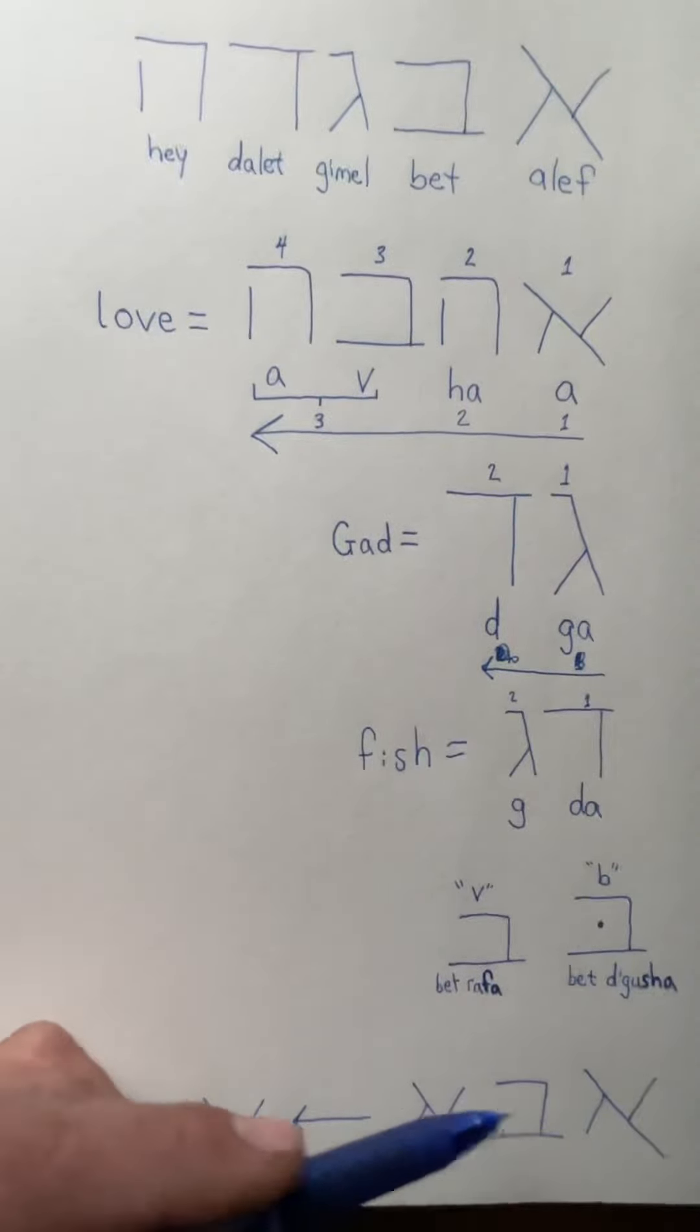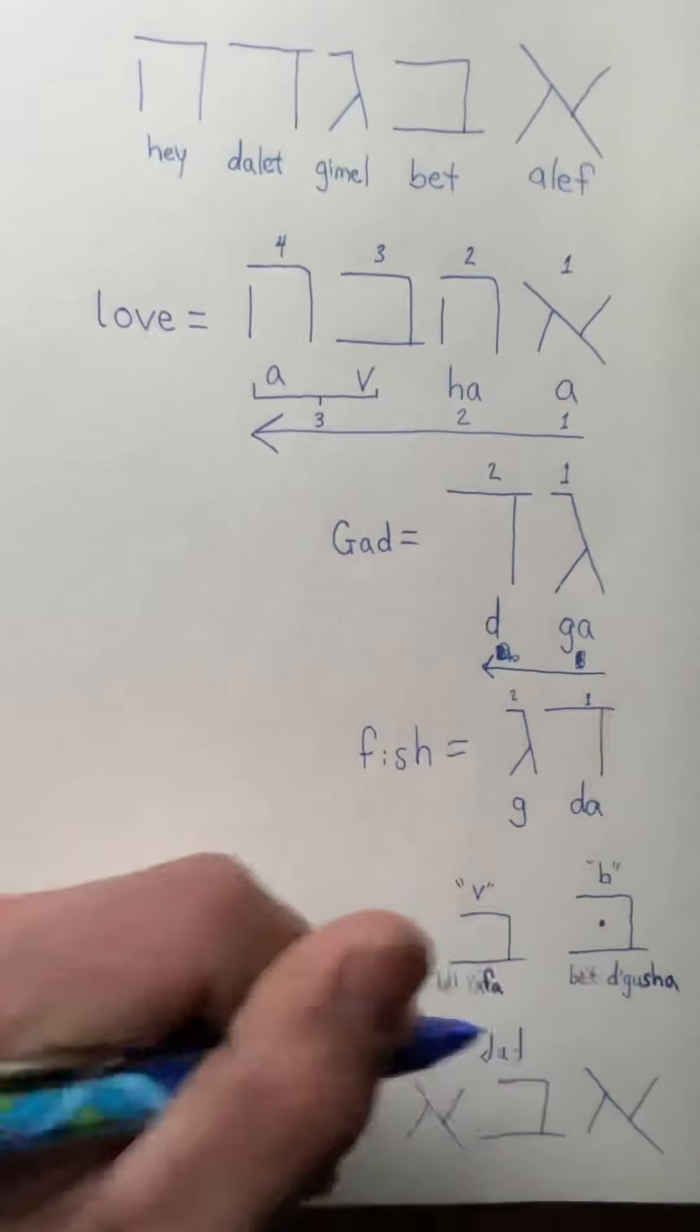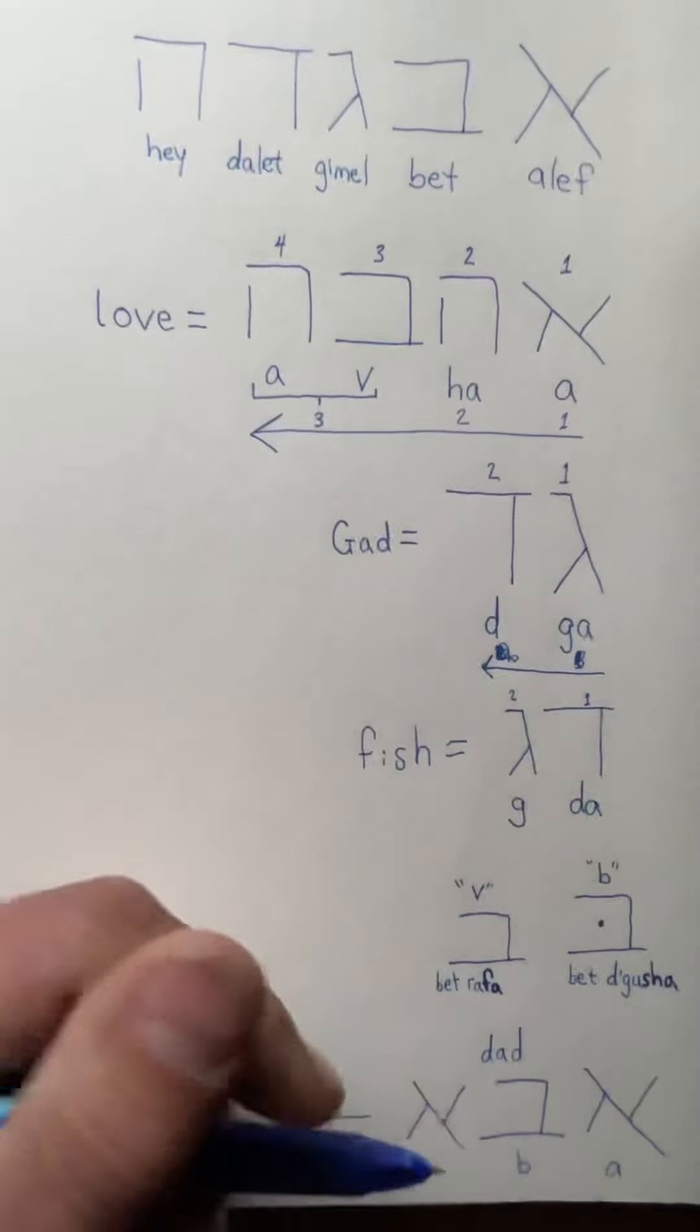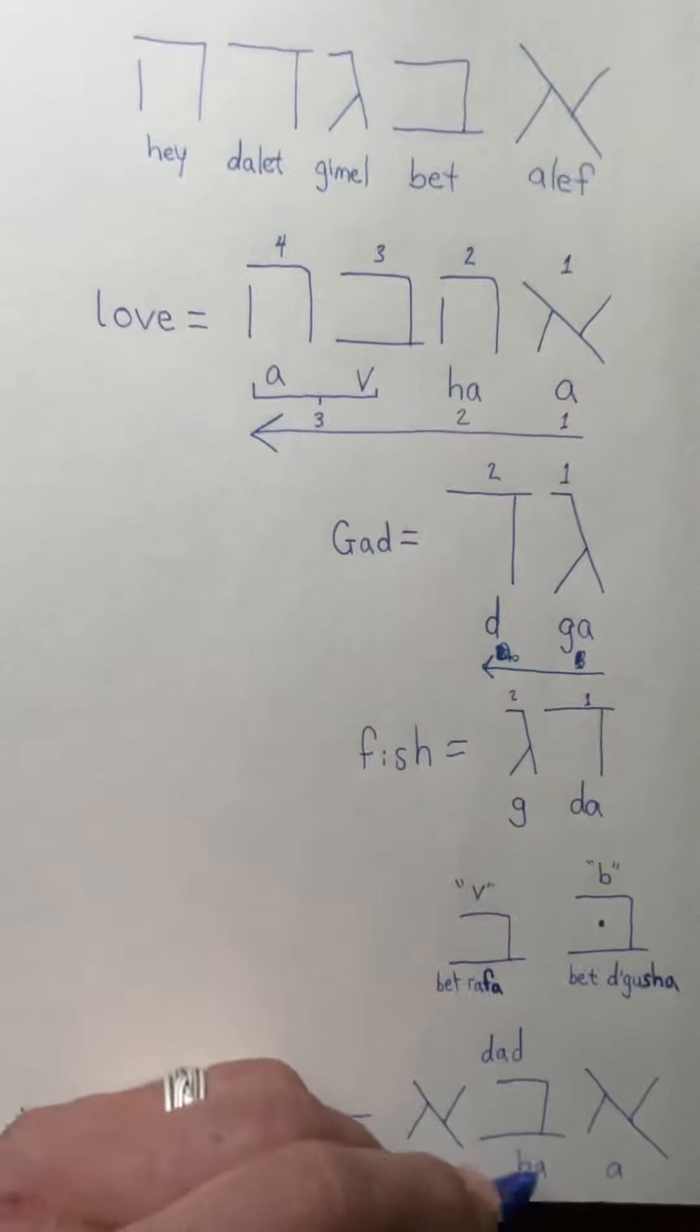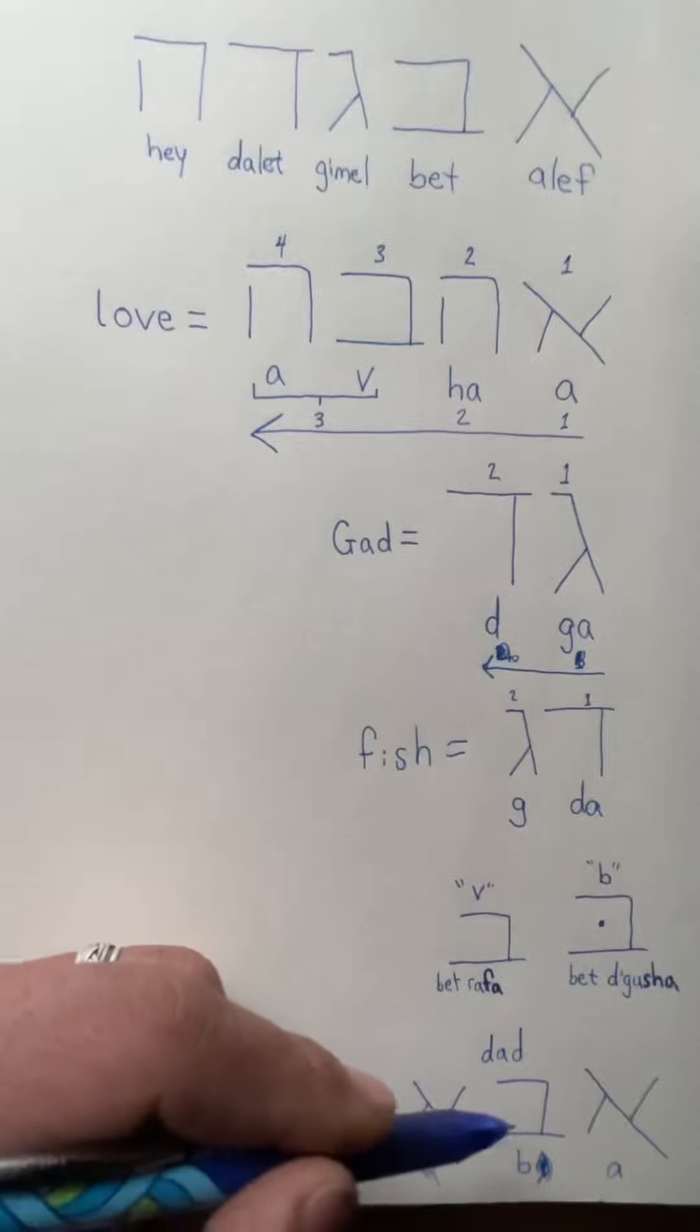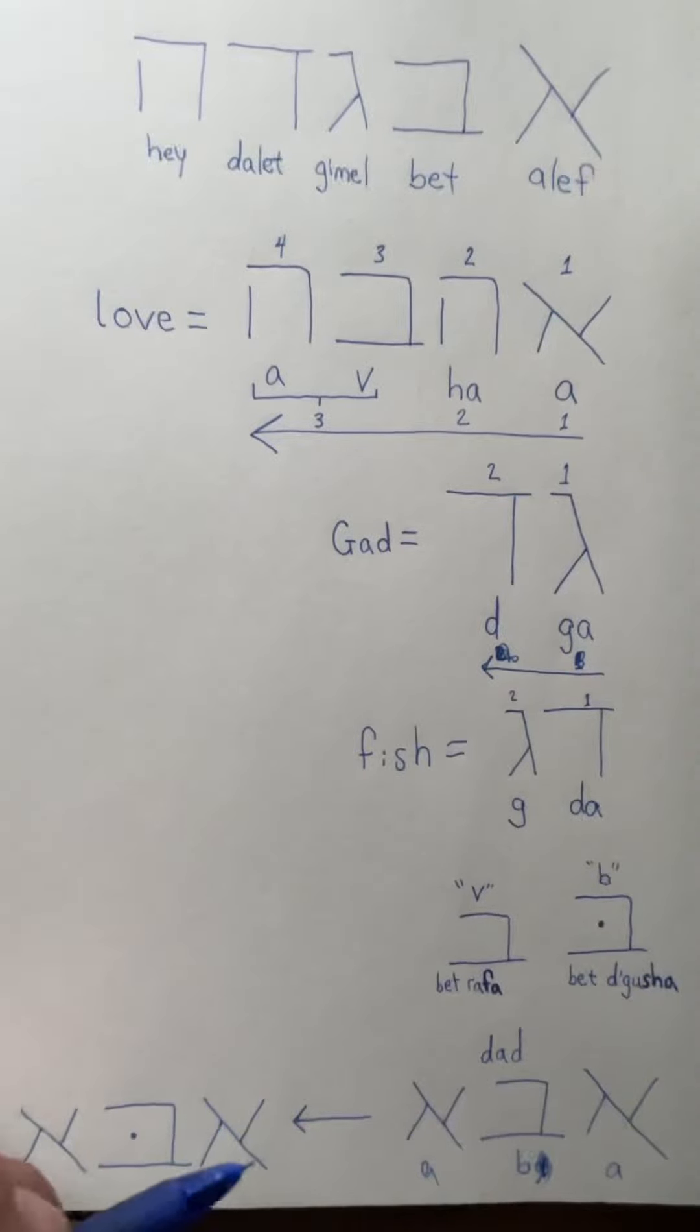This is pronounced abba, this is dad, right? I should probably write that - dad, abba. Really it's like abba. This comes from Aramaic. Av is the Hebrew word for father, and then in Aramaic you add the aleph at the end to mean 'the dad'. So technically it's Aramaic, 'the dad', abba.